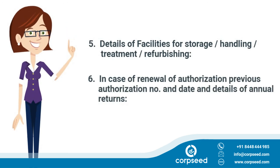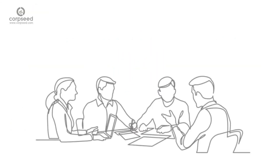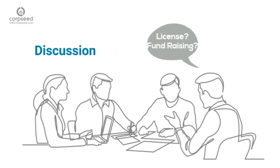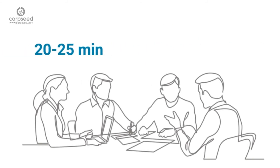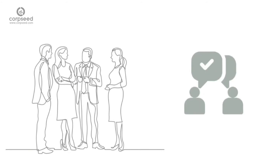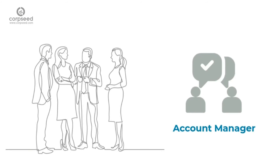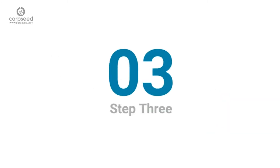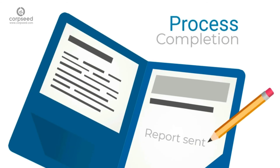It's a three easy steps process with Corpseed. Step 1 — connect with the Corpseed team to discuss specific requirements for your business; most customers take 20 to 25 minutes to discuss their business needs and get instant solutions. Step 2 — once you discuss the requirement, a dedicated account manager will be aligned to assist you with the entire process. Step 3 — once the job is completed, you will receive documents directly to your email ID.